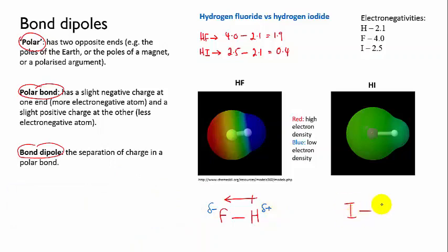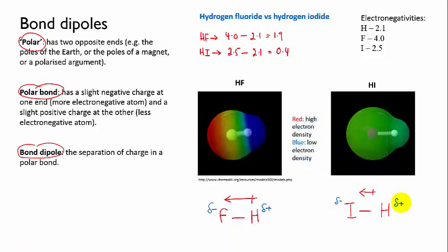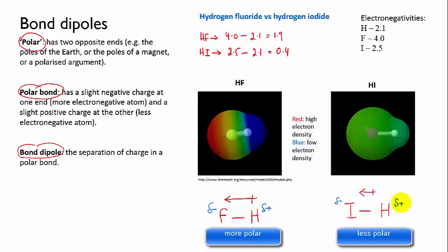And if we do the same thing for hydrogen iodide, we draw the arrow to indicate the bond dipole and we draw in our partial charges. So you can see that polar bonds are not all alike—some are more polar than others.